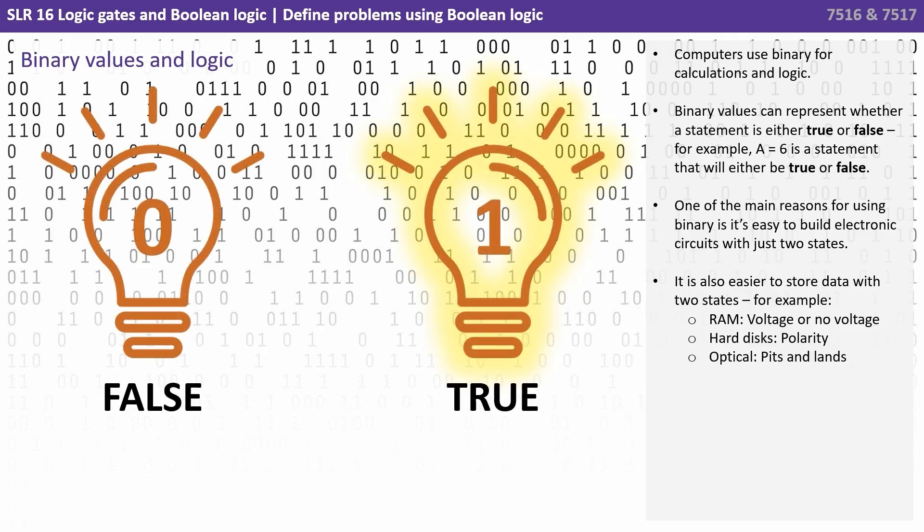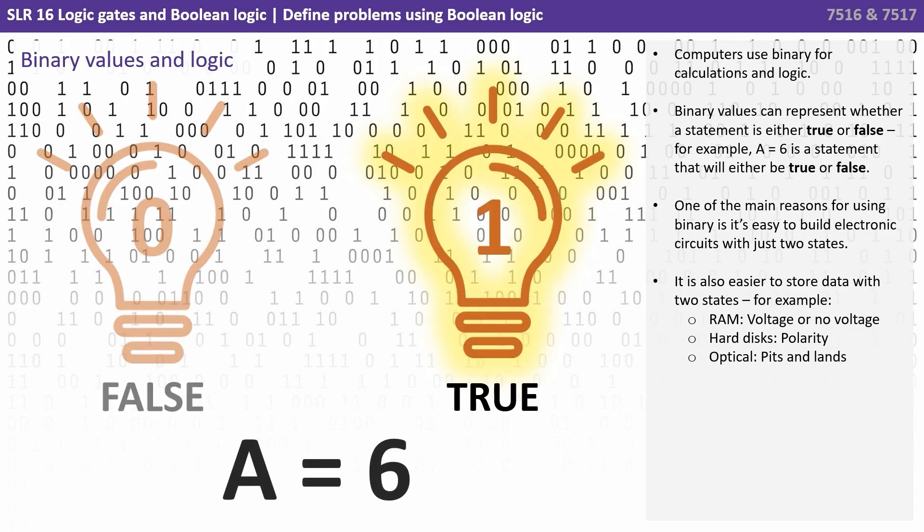Computers use binary for calculations and logic. Binary values can represent whether a statement is either true or false. For example, a equals 6 is a statement that will either be true or false.